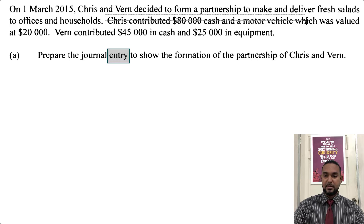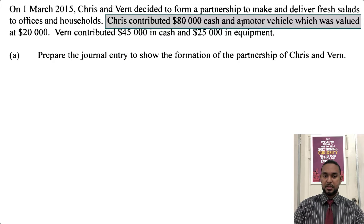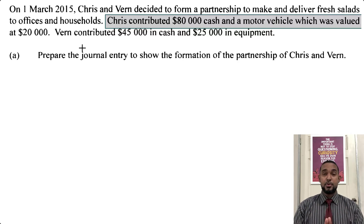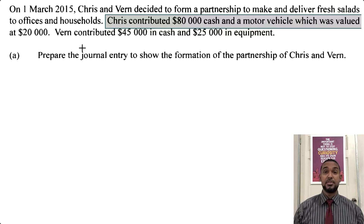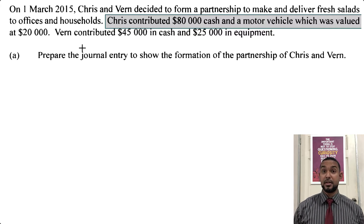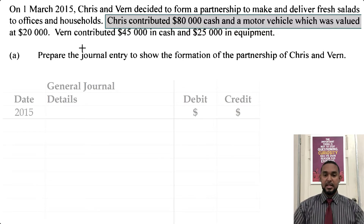Chris contributed $80,000 cash and the motor vehicle valued at $20,000. With journal entries, you enter your debit entries first. We are going to debit both cash and motor vehicle because they are both assets that are increasing, and to record increases in assets we have to debit the asset accounts.